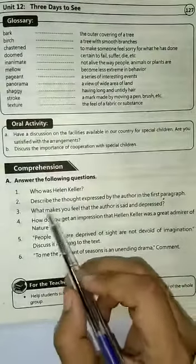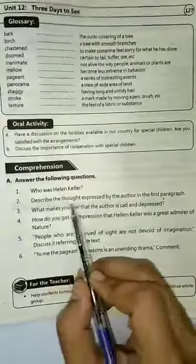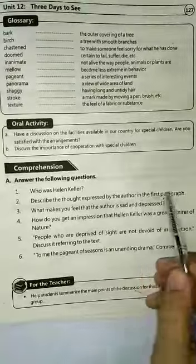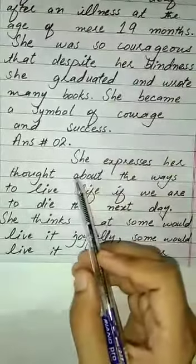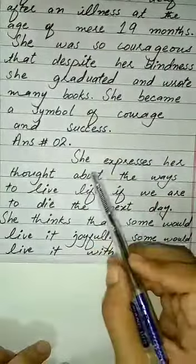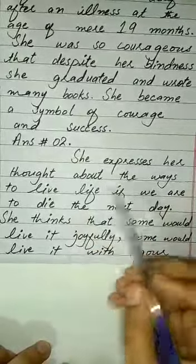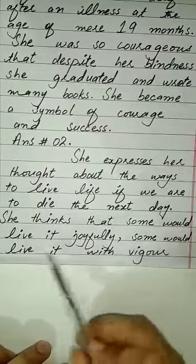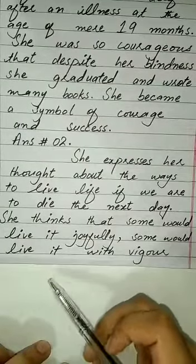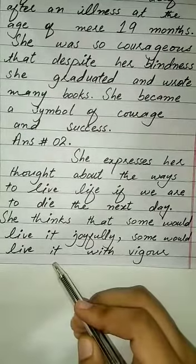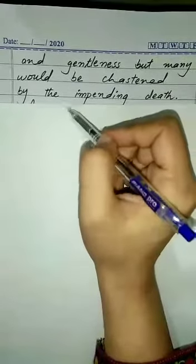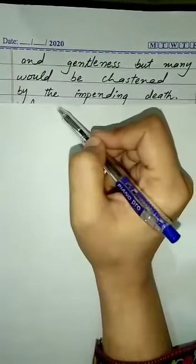Question number two: describe the thought expressed by the author in the first paragraph. The answer is she expresses her thought about the way to live life if we are to die the next day. She thinks that some would live it joyfully, some would live it with vigor and gentleness, but many would be chastened by impending death.